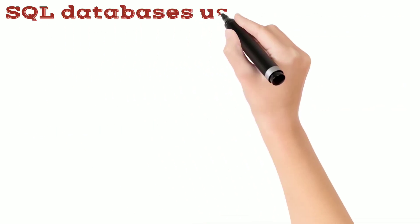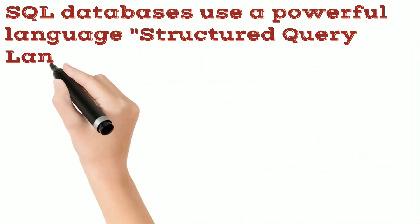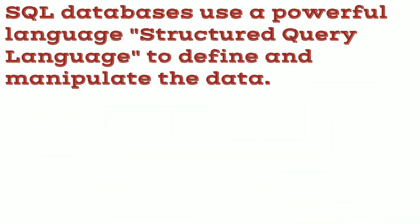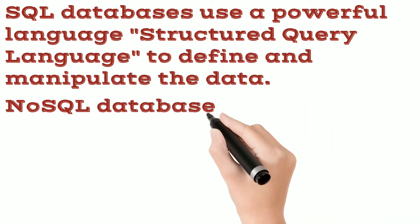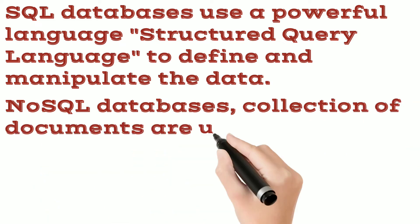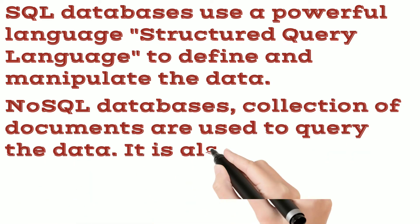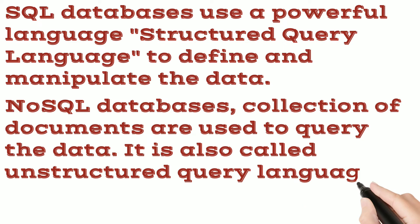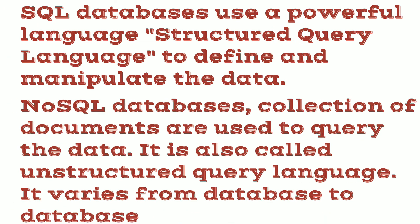SQL databases use a powerful language — Structured Query Language — to define and manipulate the data. NoSQL databases use a collection of documents to query the data. It is also called unstructured query language, and it varies from database to database.